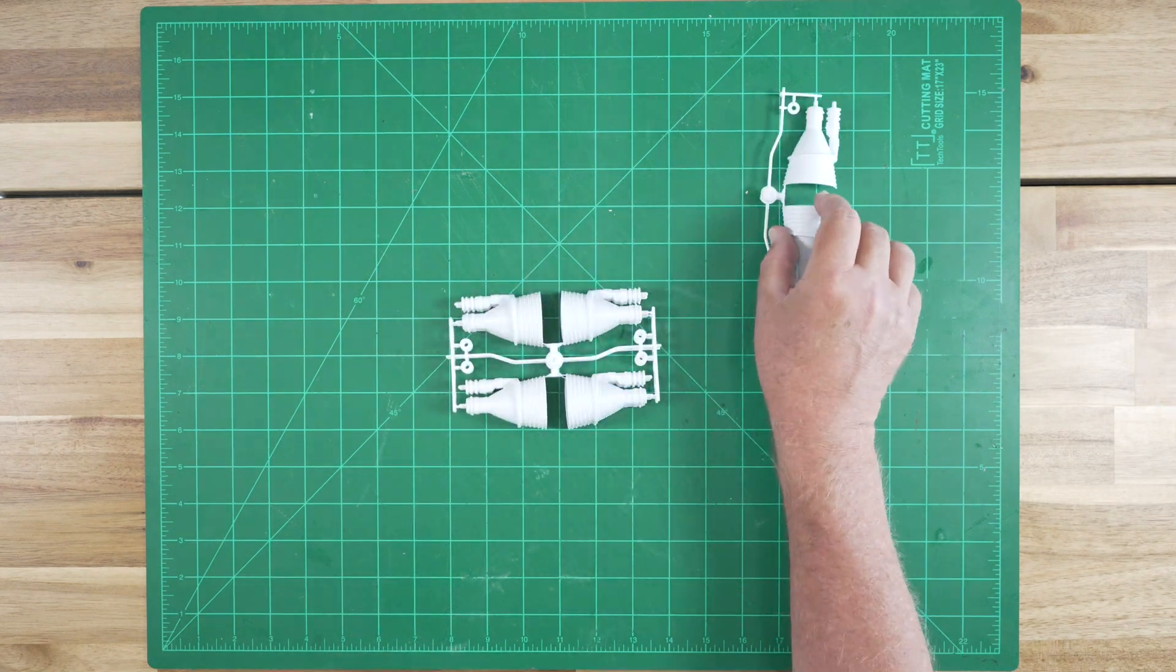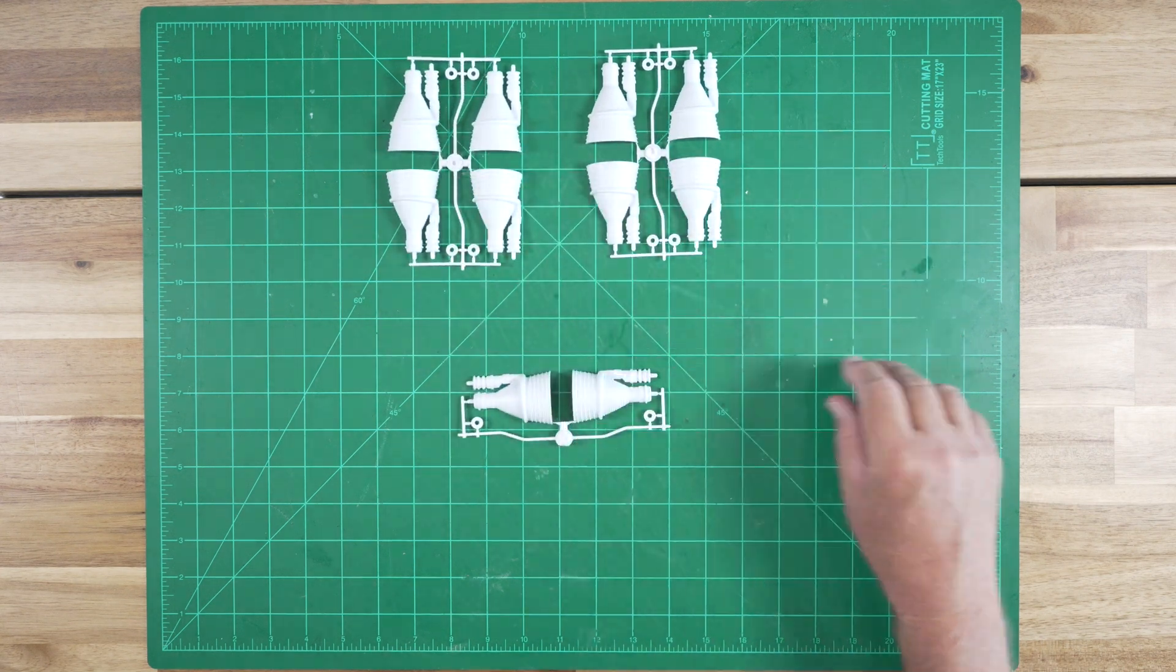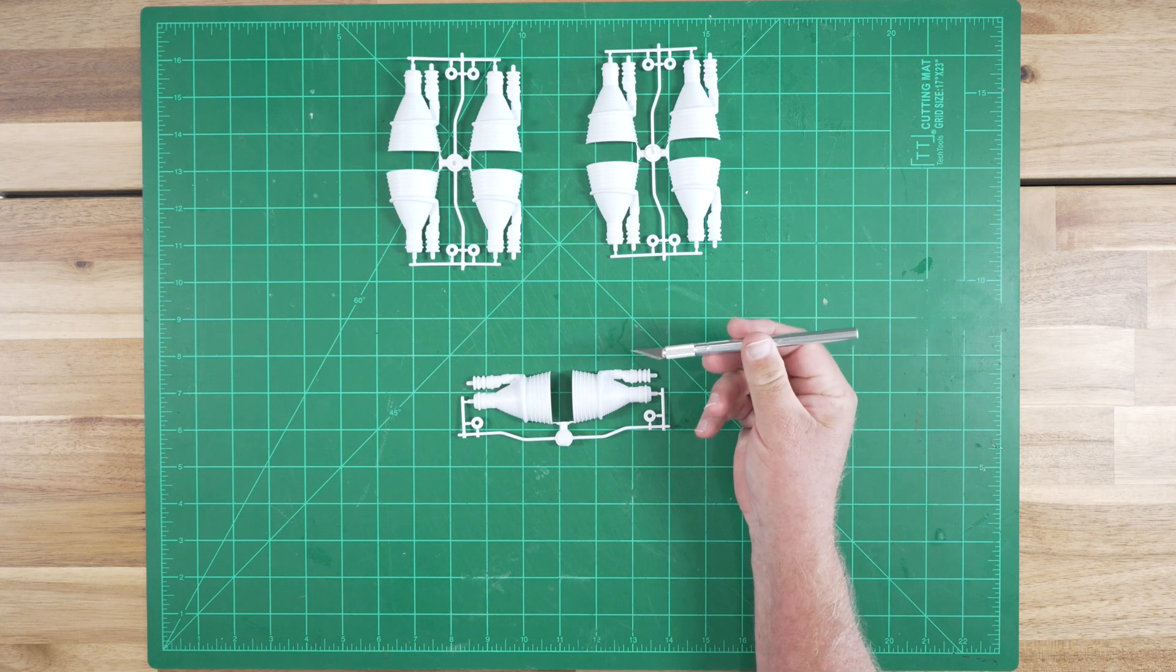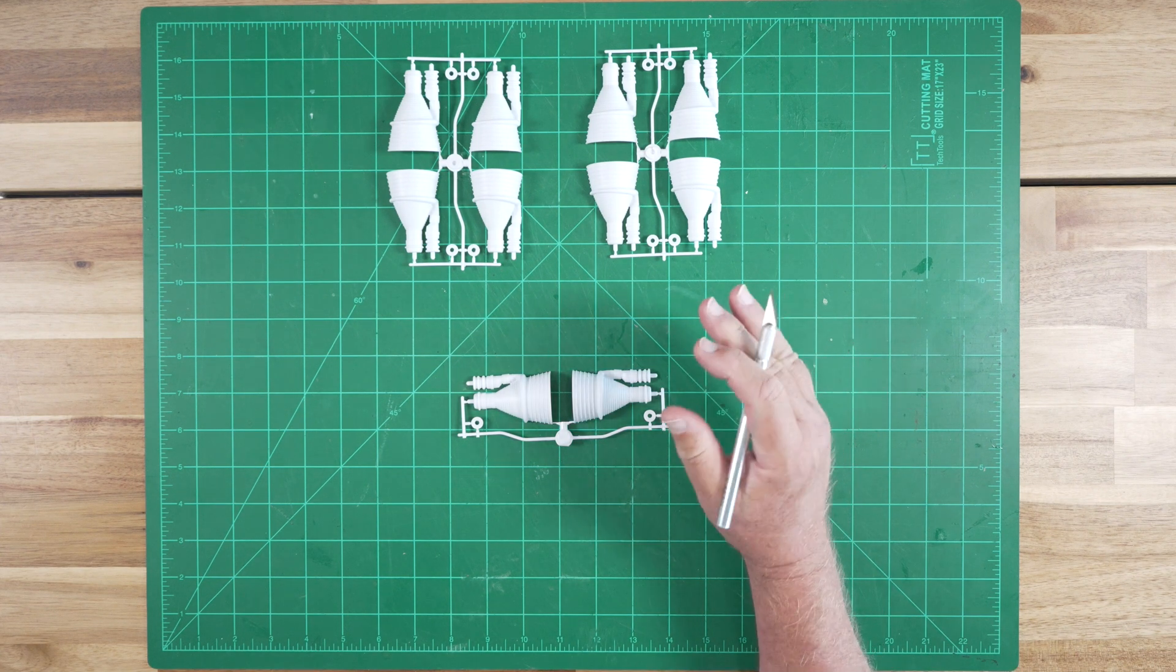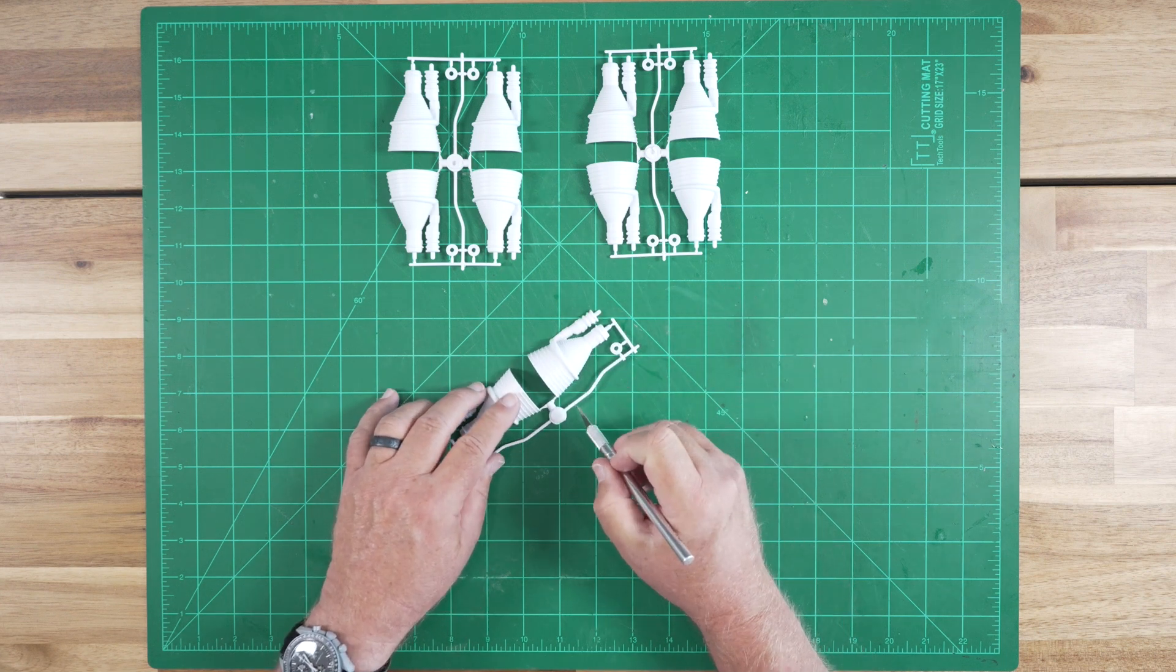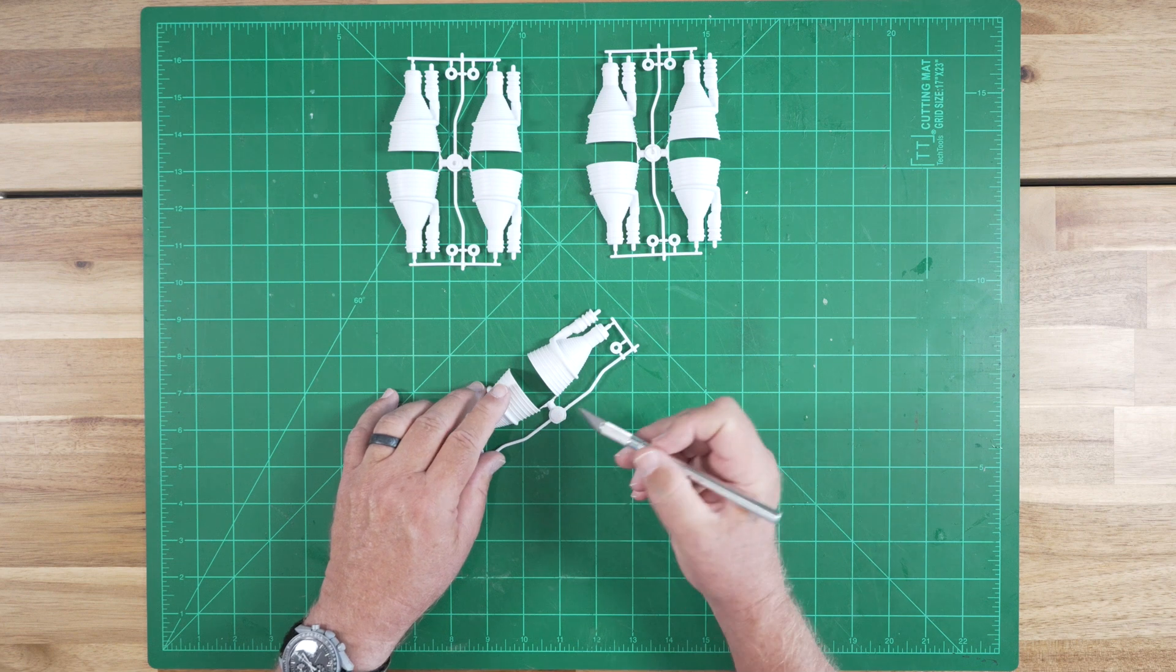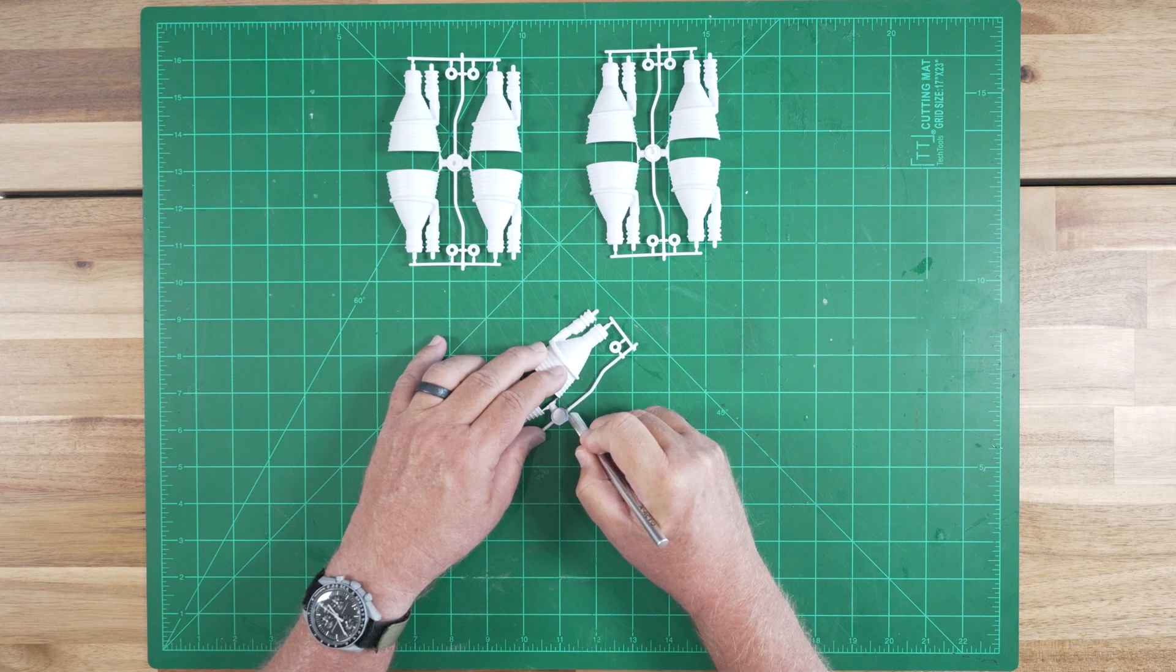We'll need to separate the nozzle parts from the sprues that they've been shipped on. And to do that, we can use a standard number 11 exacto blade. It's very easy to do. Now what we want to do here, we need to be mindful of the fact that we can damage the side of the part as we cut it off. So be very gentle.